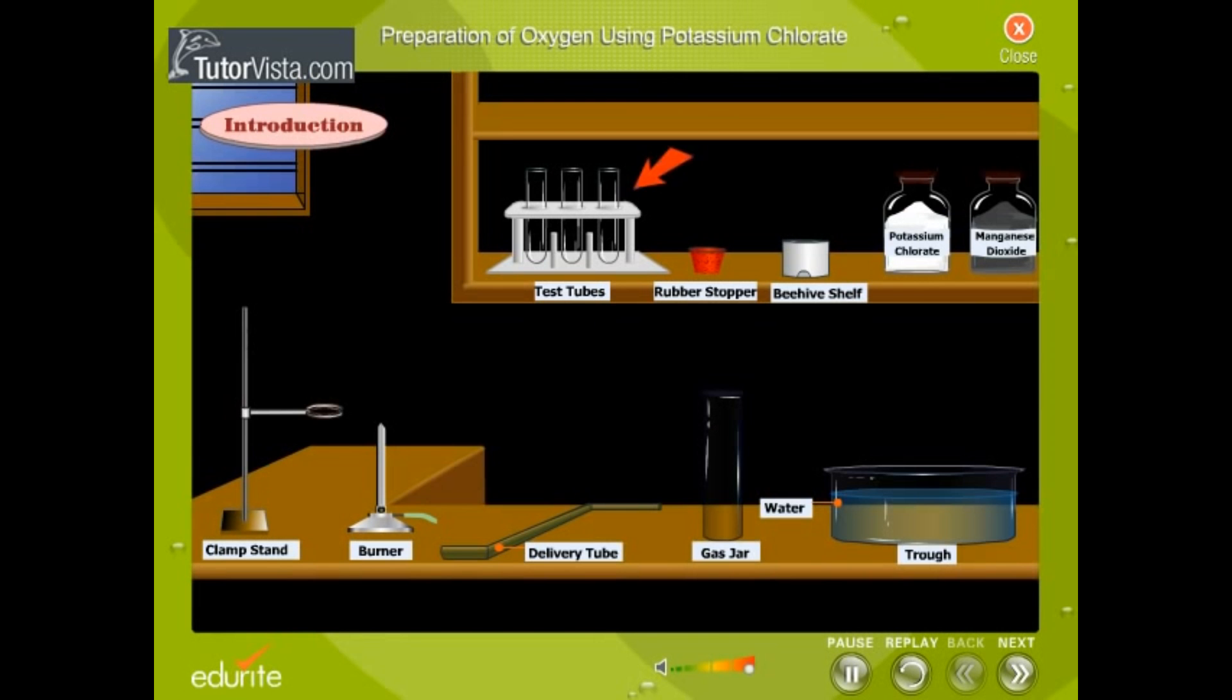You will need: hard glass test tube, gas jar, trough, delivery tube, one-hole rubber stopper, clamp stand, burner, beehive shelf, water, potassium chlorate, and manganese dioxide.